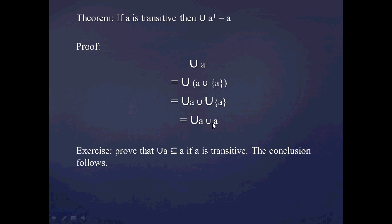To complete this proof, I need one other fact, which I leave as an exercise: that the union of A is a subset of A if A is a transitive set. And once that's true, the conclusion that this whole expression equals A just follows, because A is the larger set. So union of A is inside A, and when I union the two I get the larger set, A. The conclusion then follows.